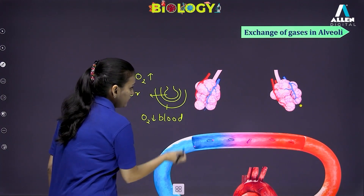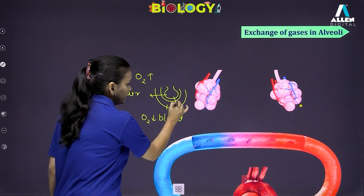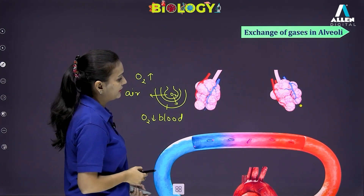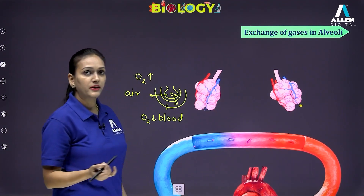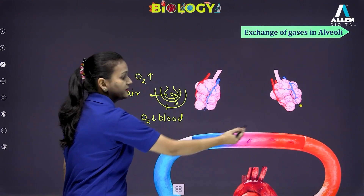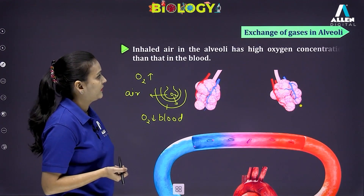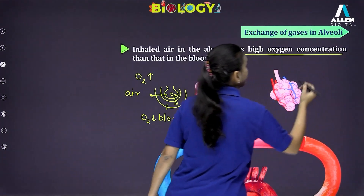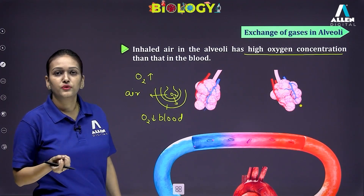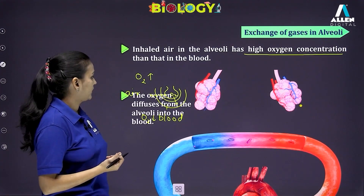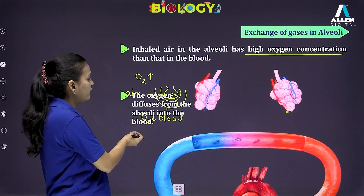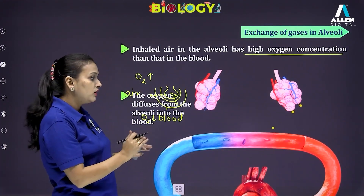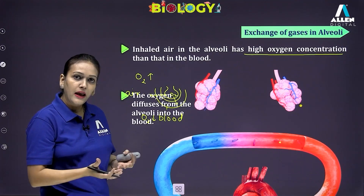Because of this concentration gradient, oxygen diffuses from the alveolar cavity into the blood. The alveoli are surrounded by blood capillaries — this is the blood supply of the lungs. Inhaled air in the alveoli has higher oxygen concentration than the oxygen concentration in the blood, so oxygen diffuses from the alveoli into the blood.